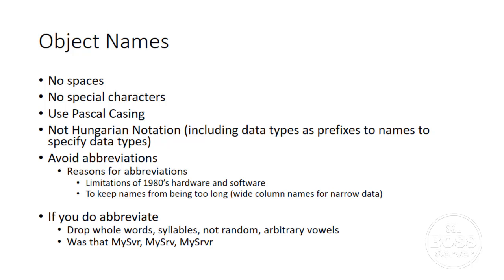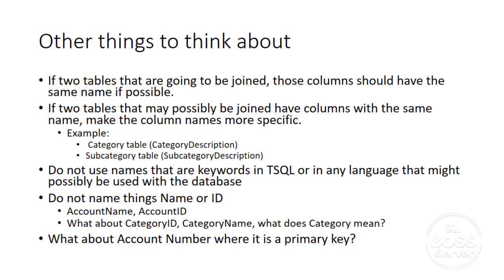If two tables are going to be joined, the columns involved in the join should have the same name if possible — and it usually is possible. Sometimes it isn't: suppose you have a person table with a person ID, and that person has multiple roles such as creator or modifier. But if two tables that may be joined have columns with the same name that aren't used for a join, make those column names more specific.